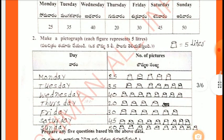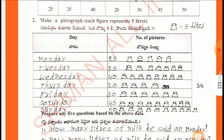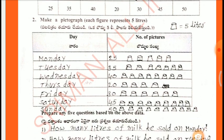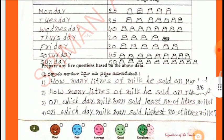Make a pictograph where each figure represents 5 liters. Monday 25 — five figures. Tuesday 35 — seven figures. Wednesday 40. Thursday 20. Friday 30. Saturday 45. Sunday 50.